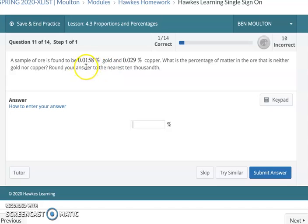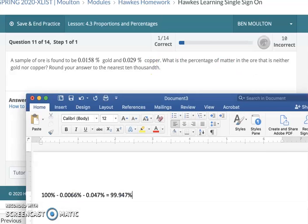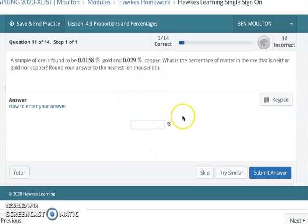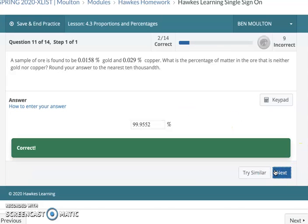Same type of problem. This time it's 0.0158% of gold, 0.029% of copper. Percentage of ore that is neither gold nor copper. Let's just take 100 and we'll subtract off 0.0158% of gold, and over here we'll subtract off 0.029% of copper. I'm going to round properly this time. So 100 minus 0.0158 minus 0.029 is 99.9552. They're asking for the nearest ten-thousandth, so let's make sure we get our rounding right. I am so humiliated. And we got it right. Yay, redemption.